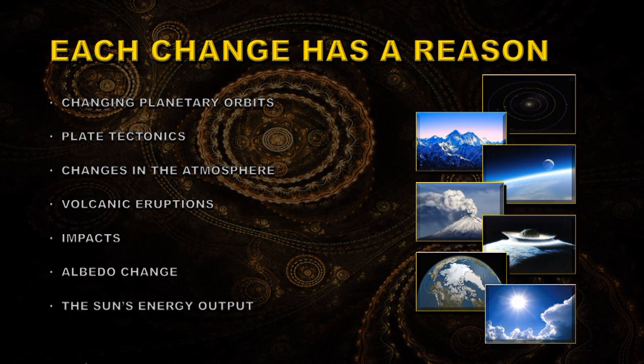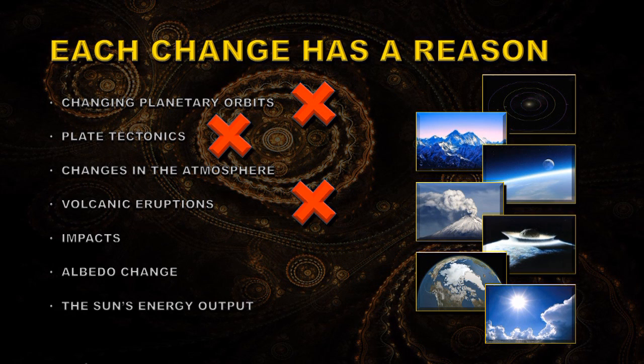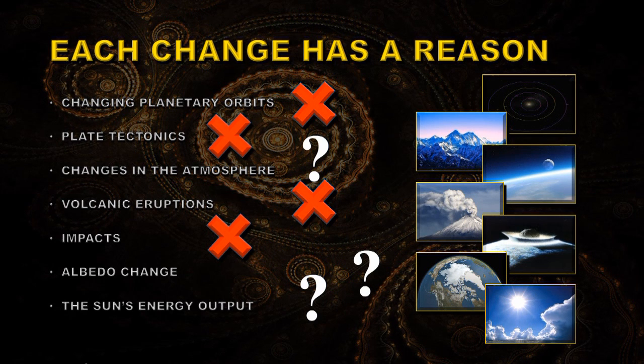We can look at the characteristics of some of these potential causes of climate change and eliminate them because they don't fit what's happening currently. For example, we can eliminate Milankovitch cycles because they are too long. The shortest of those is over 20,000 years and the longest 100,000, and the timescales that we're seeing changes on are much, much shorter than that. Plate tectonics is also a very slow process, so we can eliminate that one. Volcanic eruptions tend to cool the planet, not warm it, so that can be eliminated as well. Impacts can be eliminated because we would have noticed a major asteroid impact in the last 100 years and there hasn't been one. So that leads us to three possibilities: changes in the earth's atmospheric composition, albedo change, and change in the sun's energy output.